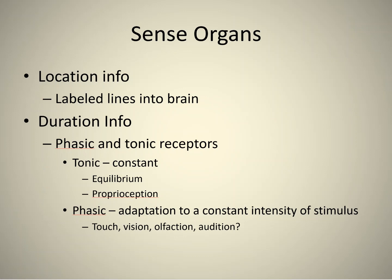On slide five, we know that your brain figures out the modality of a stimulus via labeled lines into the brain. All the different sensor information goes to different areas in the brain, and that's how your brain figures it out. We can also talk about duration when we get to what we call phasic and tonic receptors.